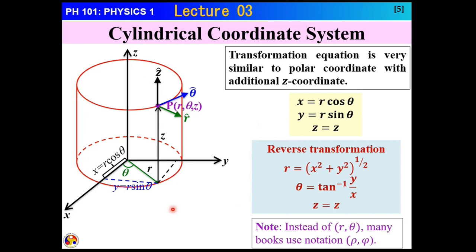Note that many books use different notation: instead of r and theta, they use rho and phi to avoid confusion with the spherical polar coordinate system, where the same notation R and theta is used. But as long as we know we are working in the cylindrical coordinate system and how r and theta are defined, there will be no mix-up.